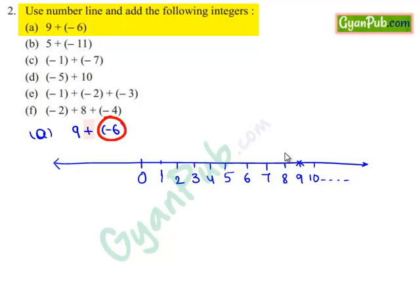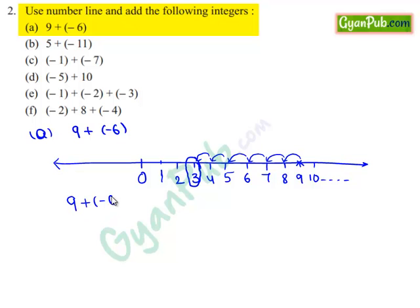Adding minus 6 means we move 6 steps to the left of plus 9: 1, 2, 3, 4, 5 and 6. We reach plus 3. So, when we add 9 and minus 6, we reach 3.